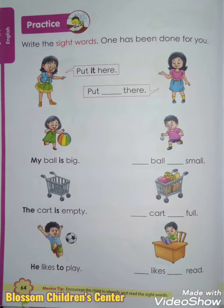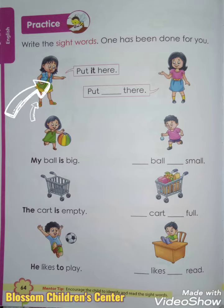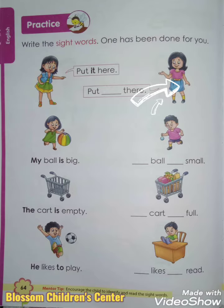Look at this picture. What is this girl saying? Put it here. It — okay, it is the sight word. Now, here, what is this girl saying? Put it there. What sight word are you saying? It.